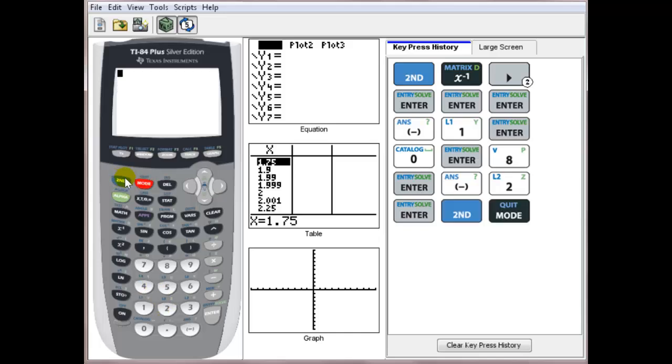Now you want to bring up the name of that matrix, so again 2nd x to the negative 1, matrix A. Remember the notation for inverse is the matrix to the negative 1 power. So now all you have to do is press x to the negative 1 power, press enter, and there you see your inverse matrix.